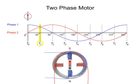At time 1, phase 1 and phase 2 have equal amounts of current flow, which creates a flux between the adjacent poles. This flux causes the rotor to turn 45 degrees to the left.